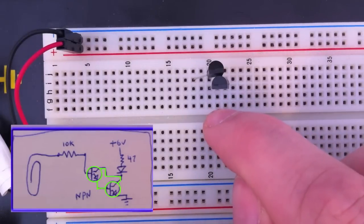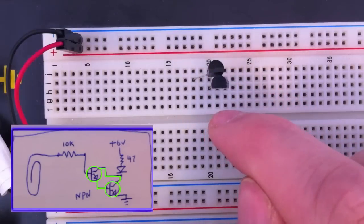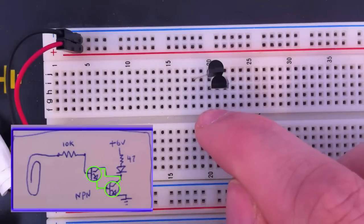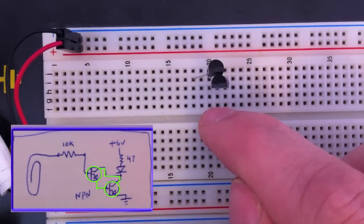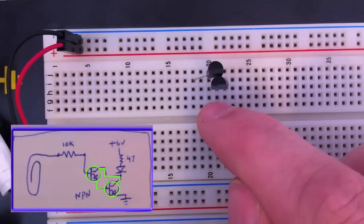The base of this first transistor is not connected to anything, and the emitter of this first transistor is connected to the base of the second.